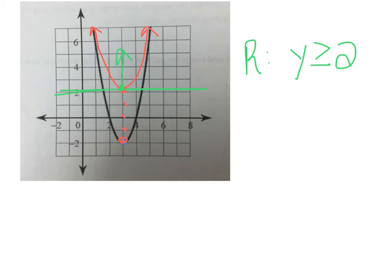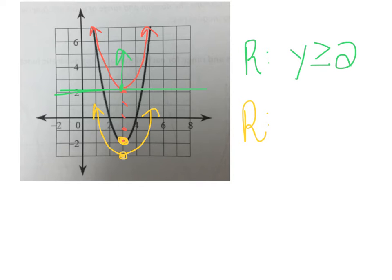The next problem asks what would happen if instead of moving up 4 units we move the graph down 1. Go back to the original vertex and move it down 1. Now the lowest value is negative 3, and since the parabola still opens up, y is greater than or equal to negative 3.